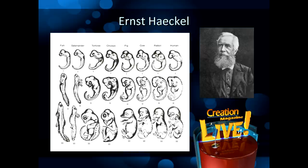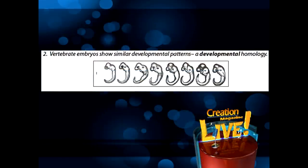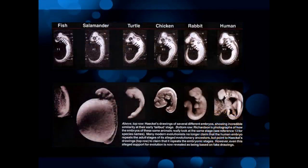Embryologists have known for a long time that these pictures are absolutely false. But a bomb exploded in 1997 when an evolutionary embryologist published real photos of embryos showing the many differences. Here are Haeckel's original embryo drawings and here are the photographs that Michael Richardson actually took. Even though many people knew this was fraud, it became an embarrassment to the evolutionary community because it was just so obvious how bad it was.